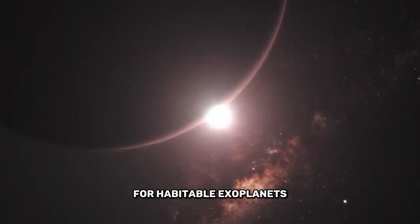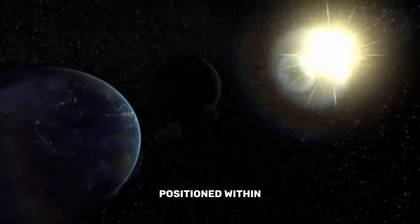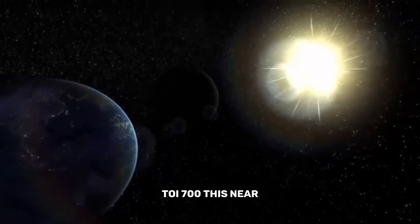In our quest for habitable exoplanets, we encounter TOI-700d. Positioned within the habitable zone of the red dwarf star TOI-700, this near-Earth-sized exoplanet has the potential to be a rocky world.